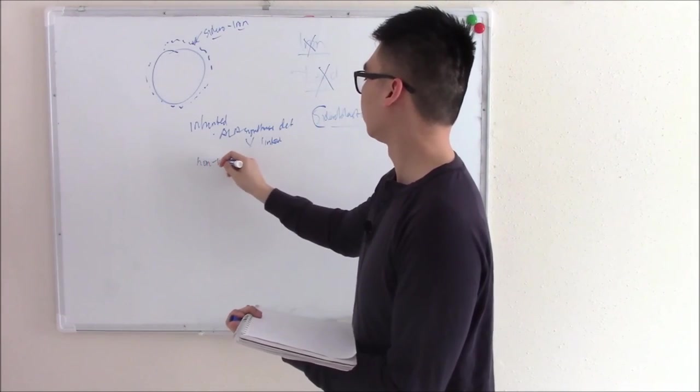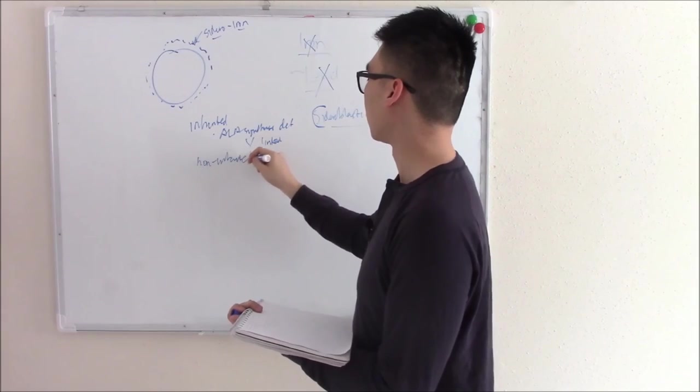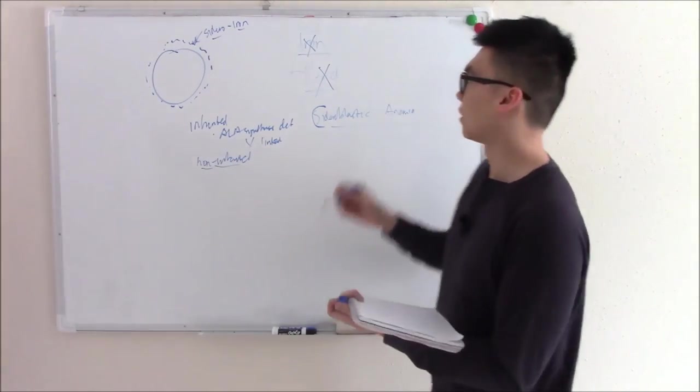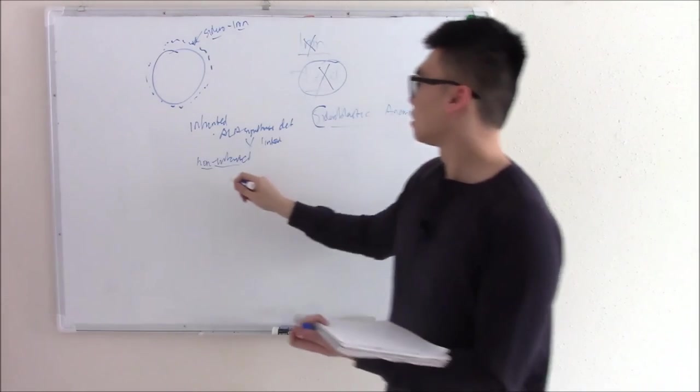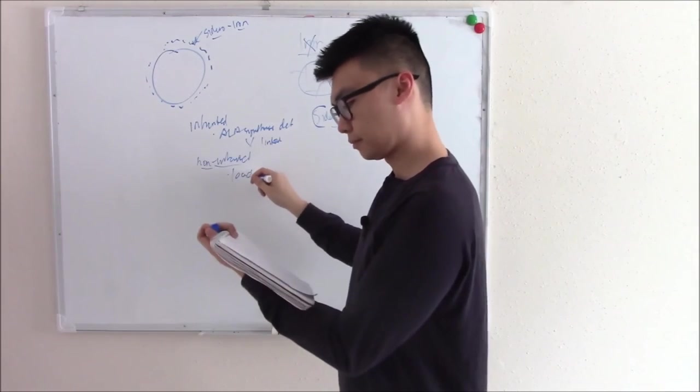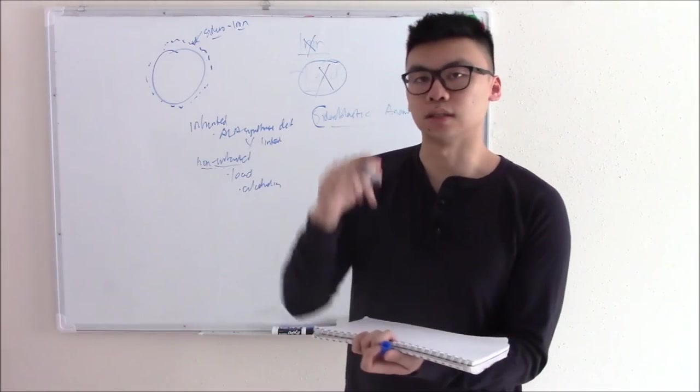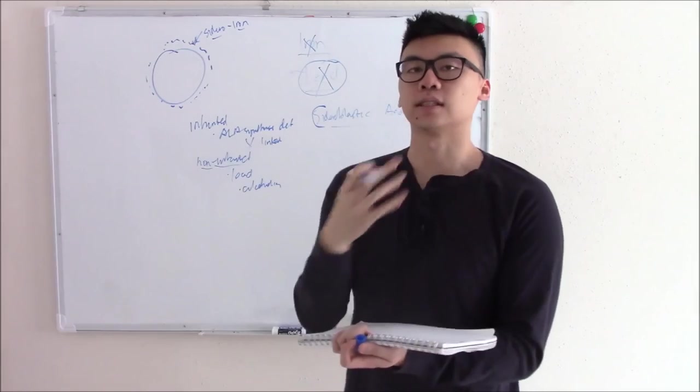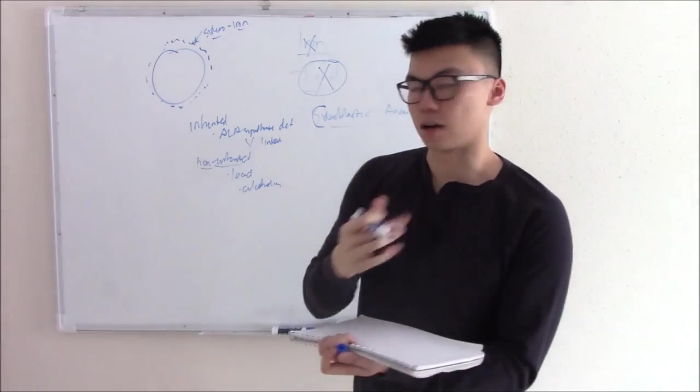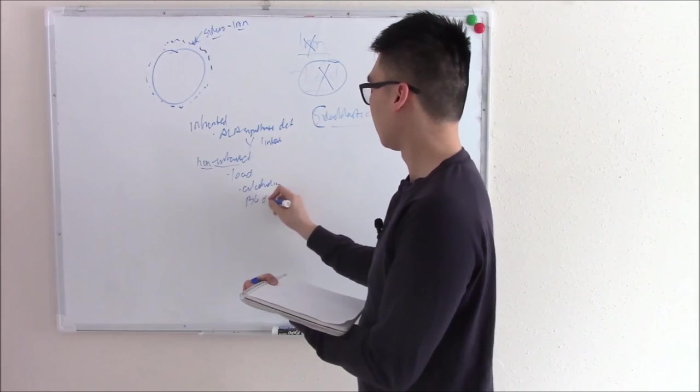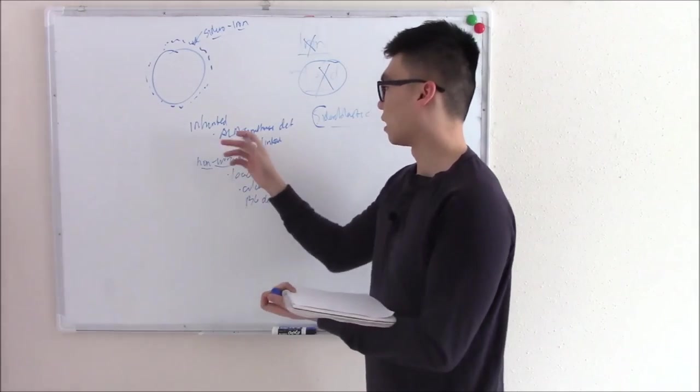Non-inherited is going to be anything that stops heme. We just talked about one about five seconds ago. Lead. So lead can cause it. Alcoholism, because alcohol is a mitochondrial poison. And heme synthesis, a few of the steps happen in your mitochondria. So that's why it causes it. B6 deficiency, because B6 is a cofactor for ALA synthase.